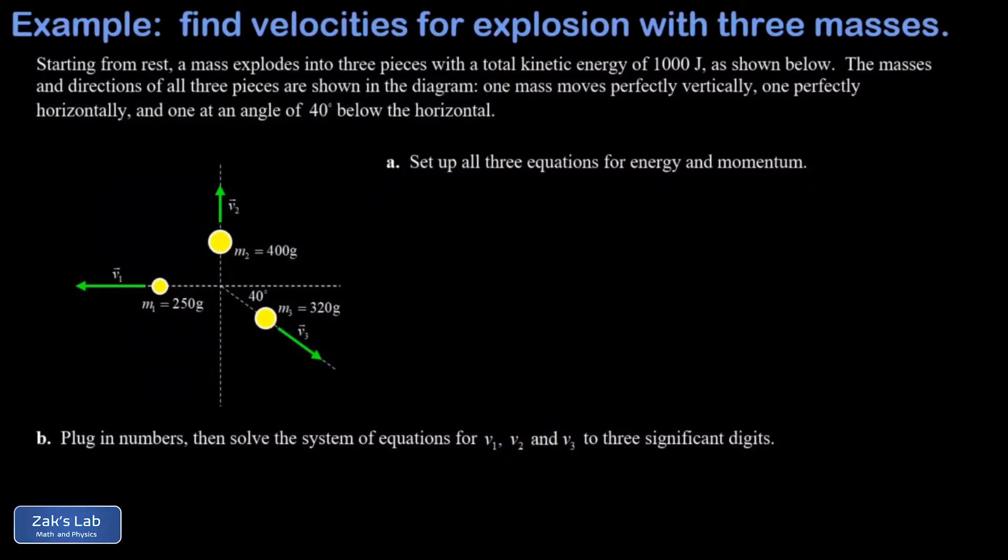In this problem, we're given an explosion with a known amount of energy, 1,000 joules. This originates from some mass that was originally at rest. We're given the direction of all three fragments that come off this explosion, the mass of every one of those three fragments, and we want to solve for the speeds of all of those fragments.